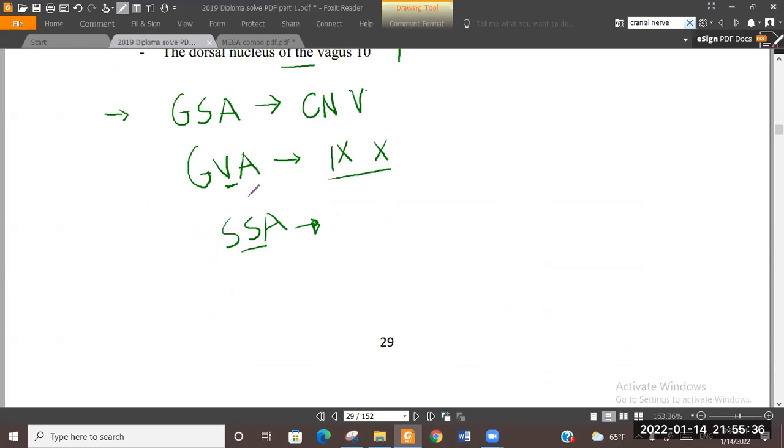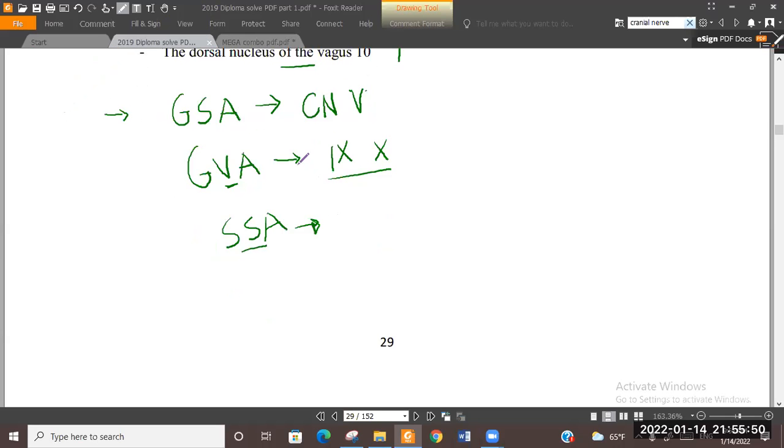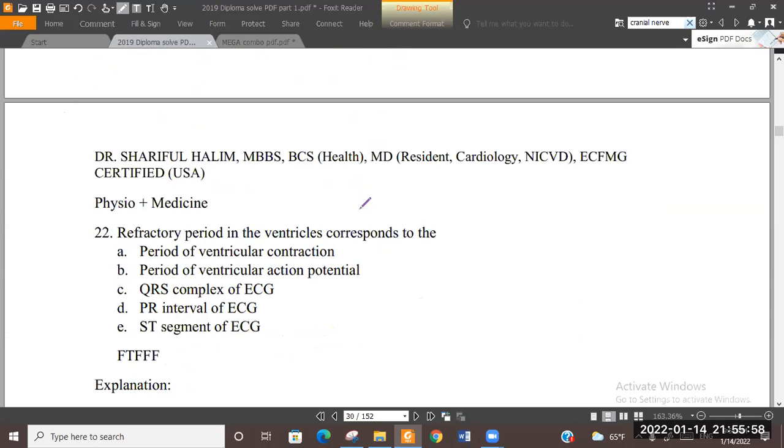Special somatic afferent is 8. I don't know why 8 is general somatic afferent and also special somatic afferent. 8 has special sensory function - hearing and vision. Special motor functions - I don't know, probably that's right.